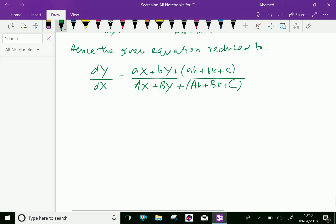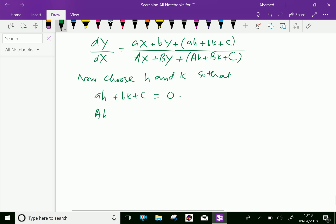Now you have to choose h and k such that ah plus bk plus c equals 0 and ah plus bk plus c equals 0 form a simultaneous equation. By solving,